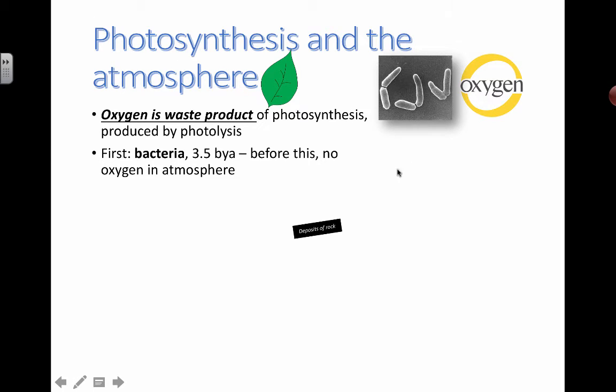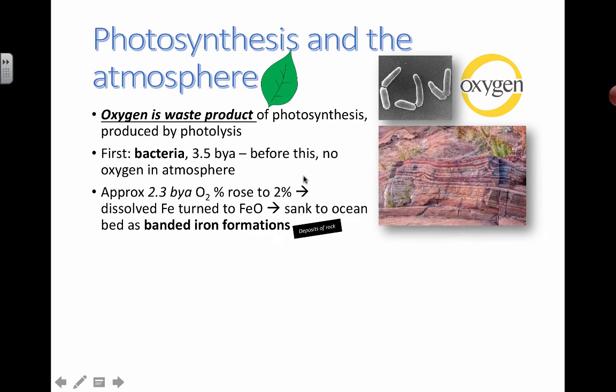So first off photosynthesis, maybe the first bacteria 3.5 billion years ago were the first ones to help introduce oxygen into the atmosphere. So before that there was no oxygen in the atmosphere. Early earth had no oxygen, a very unhappy environment for us oxygen loving organisms.